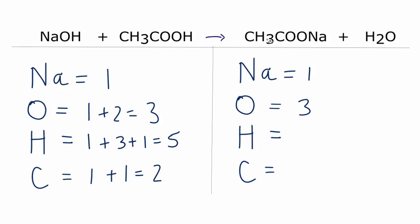Hydrogens, we have the 3 here plus the 2. 3 plus 2. So we have 5 hydrogens. And carbons, we have the 1 carbon here plus this 1 carbon right here for a total of 2.